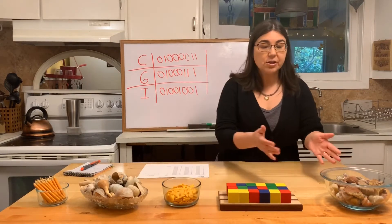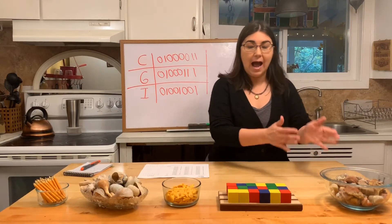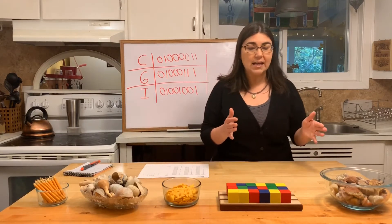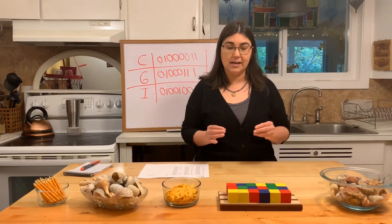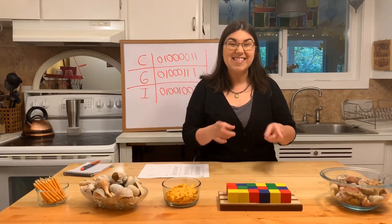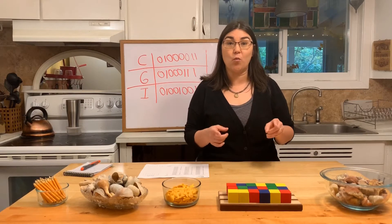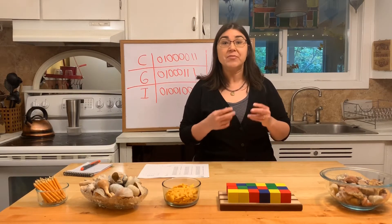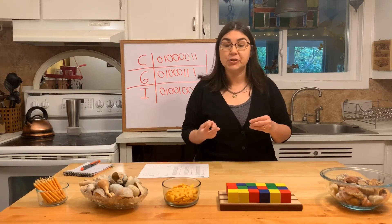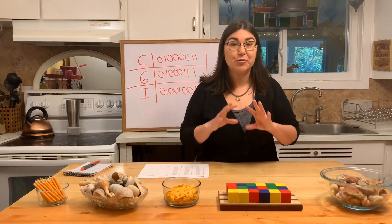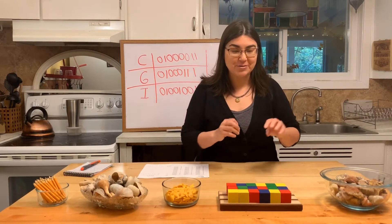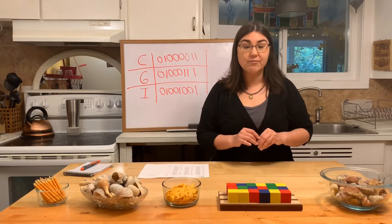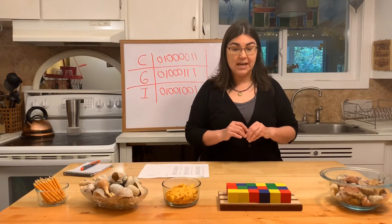As you can see in front of me, I have different items. These are going to represent our ones and zeros, because as I mentioned with binary code, it could be any two symbols. We are changing the ones and zeros and making them into any two of these symbols here.